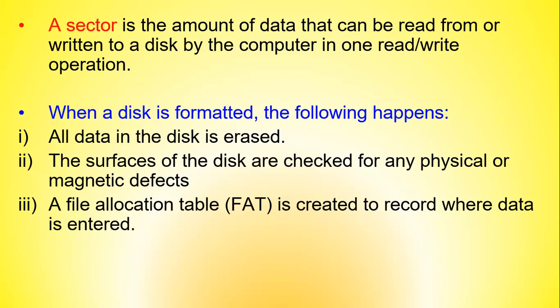When a disk is formatted, the following usually happens: all the data on the disk is erased; the surfaces of the disk are checked for any physical or magnetic defects; and a file allocation table is created to record where data is entered.